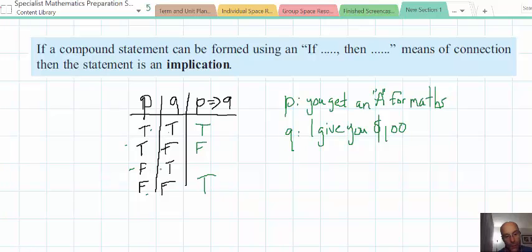What about the third one, the final one that we've got to look at, is false and true. That's a weird one, isn't it? So, you don't get an A for maths, but I still give you $100. A lot of people would be tempted to put false there, because that doesn't sound right. I mean, I said if you got an A, I'd give you $100. It's actually true.